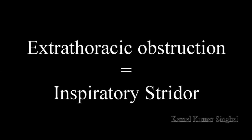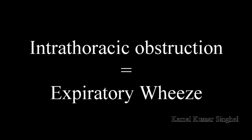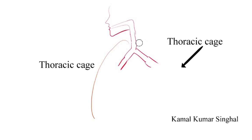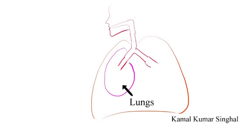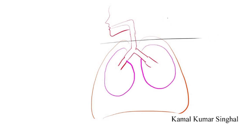Why do we have a predominantly inspiratory sound during extrathoracic obstruction and an expiratory sound during intrathoracic obstruction? If you look at the airway, this is the thoracic cage and this is the diaphragm, and these are the lungs. This is the extrathoracic airway above the thoracic inlet, and down below is the intrathoracic airway below the thoracic inlet.